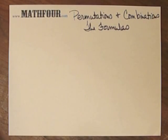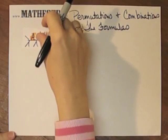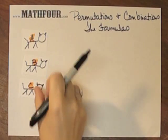We're looking at permutations and combinations formulas, and so we have three cats: cat A, B, and C.